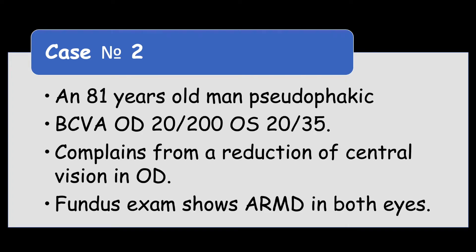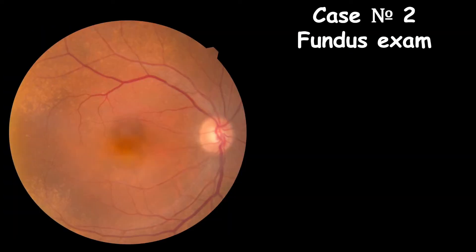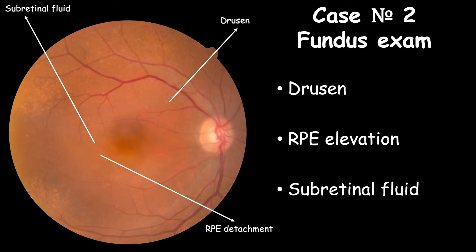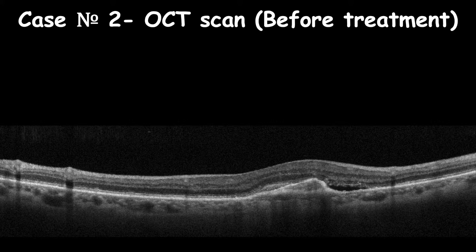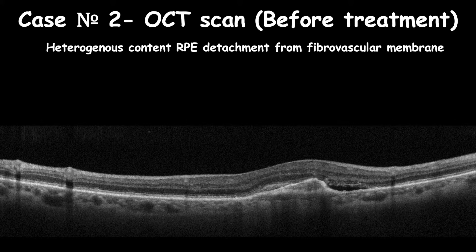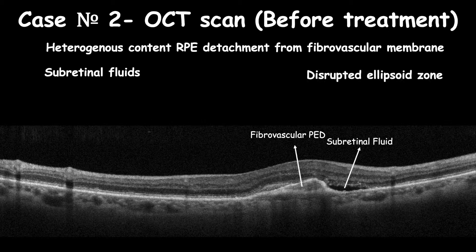An 81-year-old pseudophakic patient, with best corrected visual acuity of 20/200 in his right eye and 20/35 in his left eye, presented with signs of AMD in both eyes. Fundus examination shows drusen, RPE elevation, and subretinal fluid. OCT cross-sections show areas of RPE detachment induced by fibrovascular membrane and subretinal fluid along with disrupted ellipsoid zone.